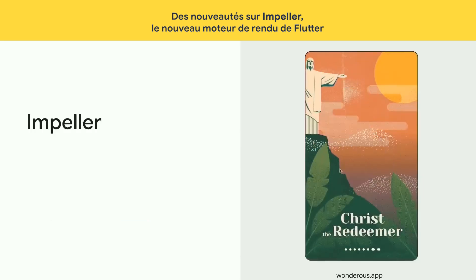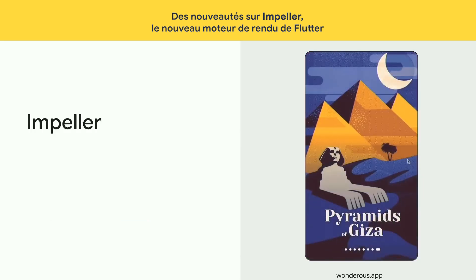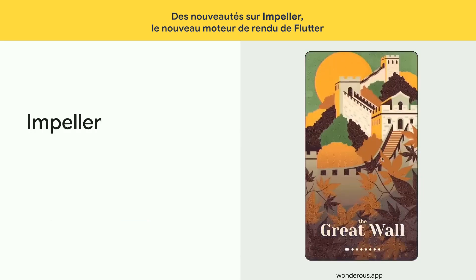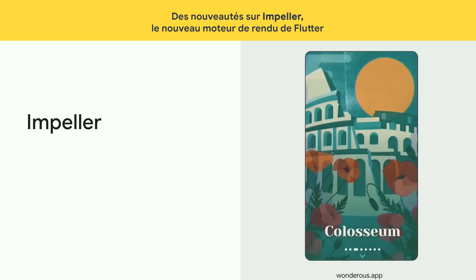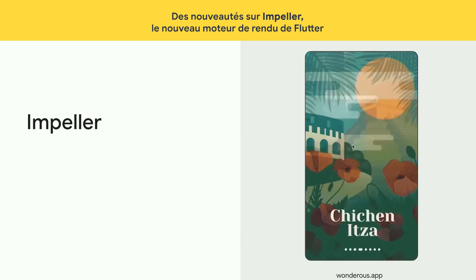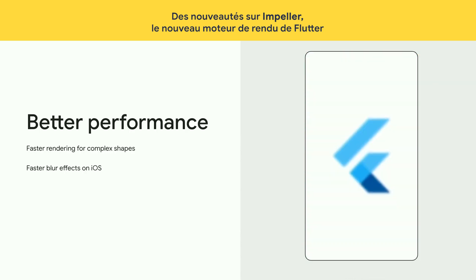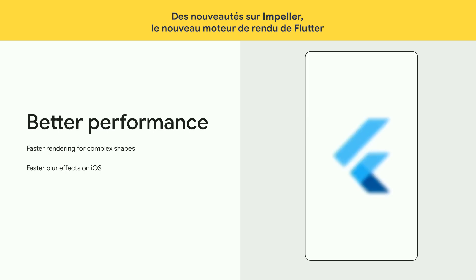So what is Impeller? It's a major rewrite of our graphics engine. It improves graphics performance by baking shaders into the engine, so complex shapes like SVGs or Lottie animations run significantly faster on the latest version of Impeller, and BlurFX runs two times faster now on iOS.